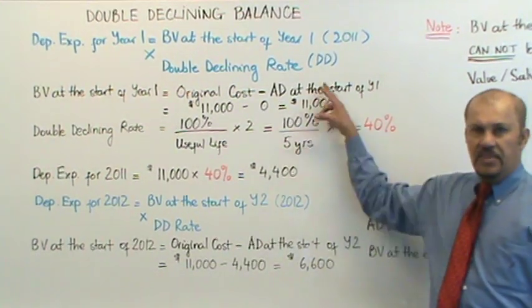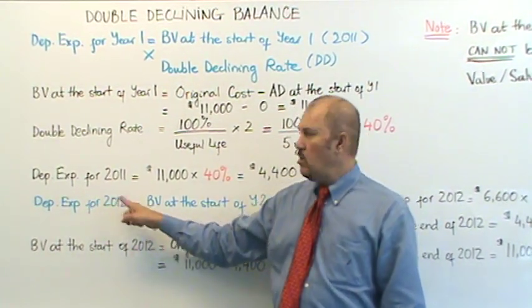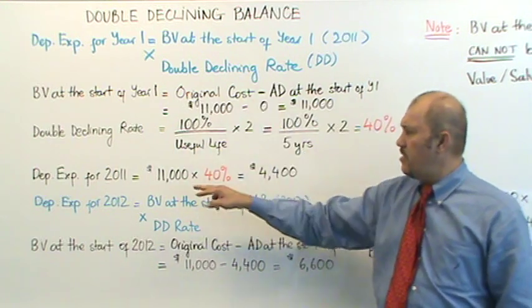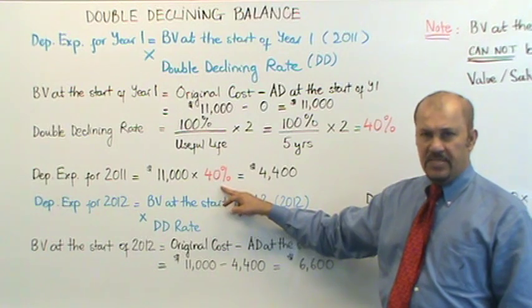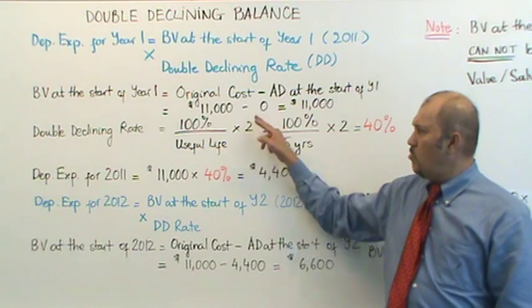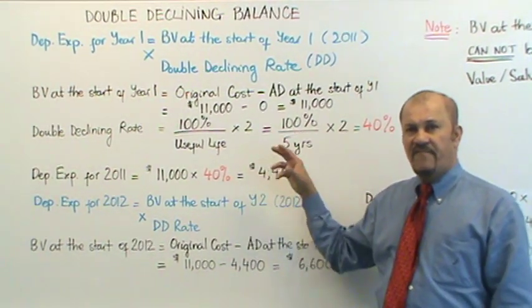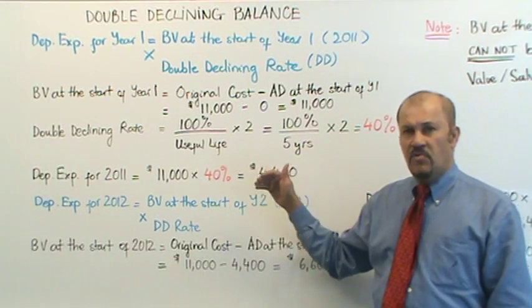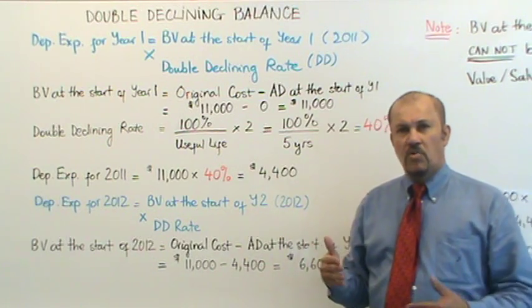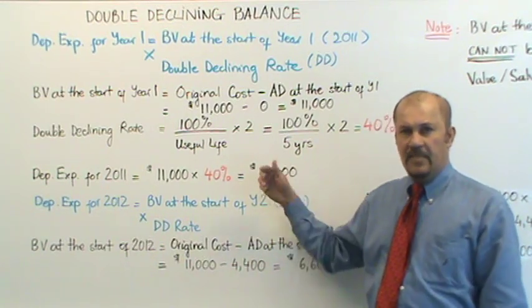Next, we'll take these two formulae and combine them to calculate the depreciation expense for 2011, or year one. That would be your book value at the start of year one, calculated as $11,000, times 40%, which equals $4,400. Note that under this method, unlike other methods, we do not factor the salvage value or residual value at the start of the calculations. Instead, we factor the salvage value or residual value during the last year of calculations, and I'll explain more about that in a few minutes.